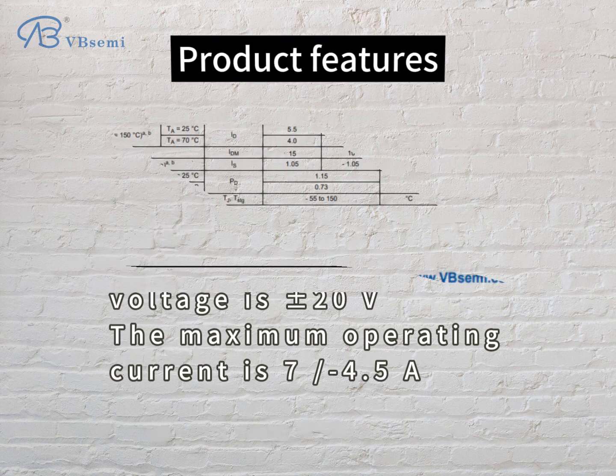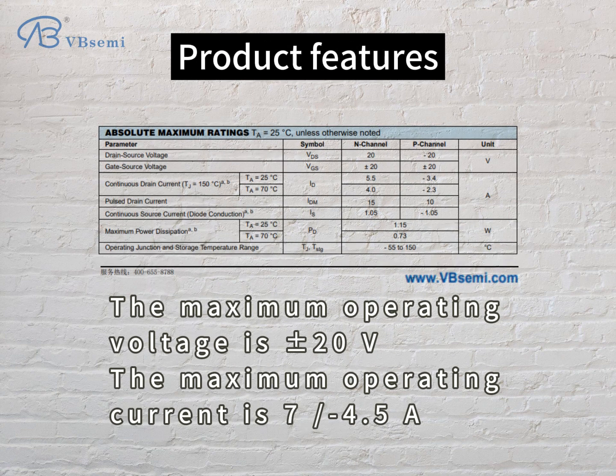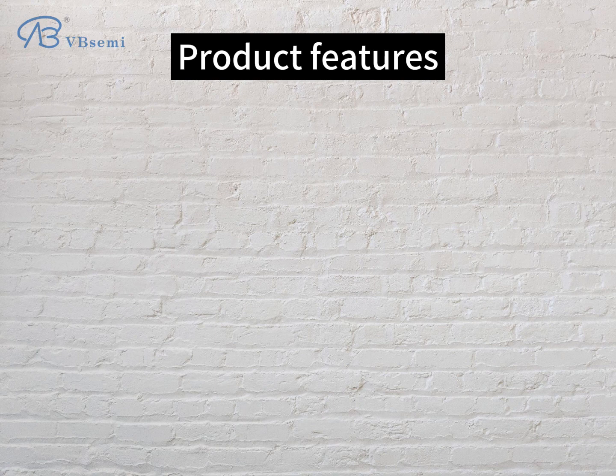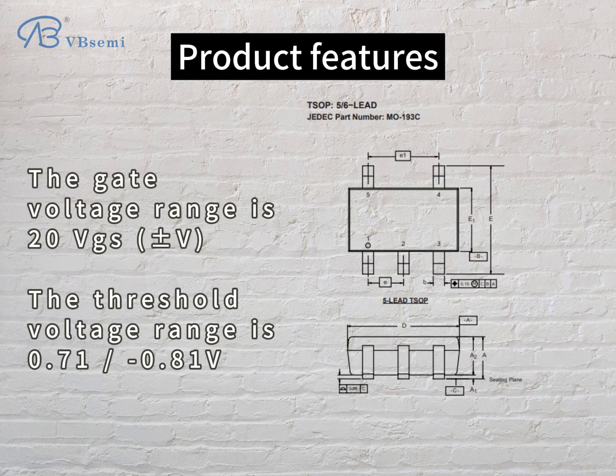The maximum operating voltage is plus or minus 20V. The maximum operating current is 7 or minus 4.5A. The gate voltage range is 20V GSV.